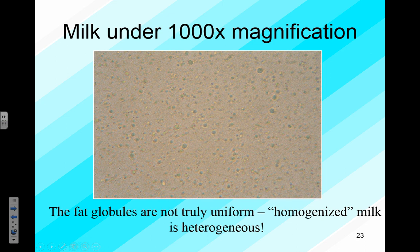It looks homogeneous to the naked eye, but under a microscope you can see it really isn't uniformly mixed. The process of homogenization with milk is to make it appear homogeneous — essentially making it a colloidal substance.